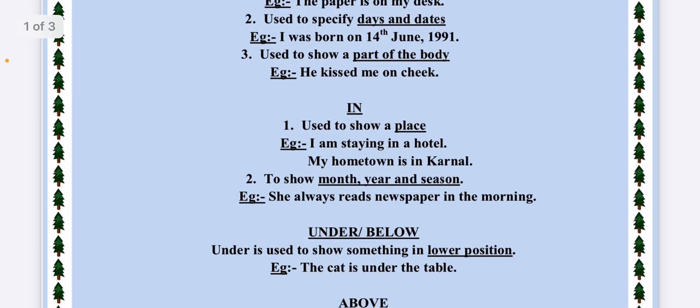The next preposition is IN. In means something which is in. It is used to show a place, like you are in a hotel. My hometown is in Karnal. And to show month, year and season. She always reads newspaper in the morning. I got ill in the month of February. Republic Day is celebrated on 26th January every year. Republic Day was celebrated in 2020 with great enthusiasm.